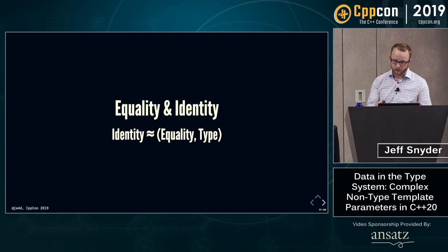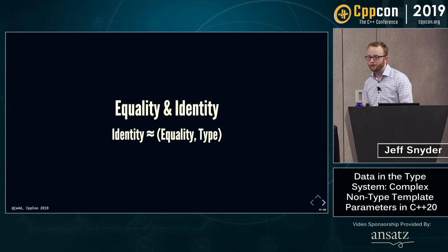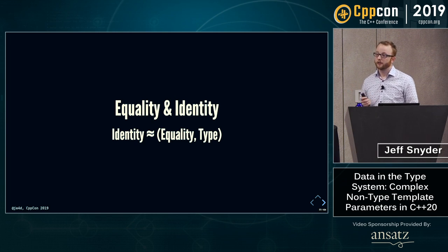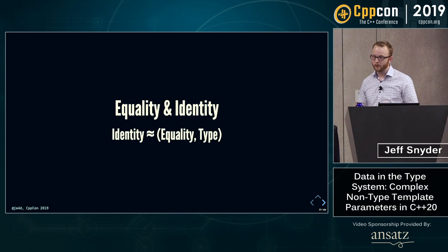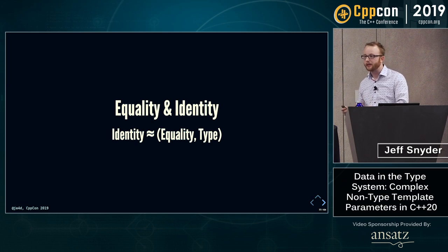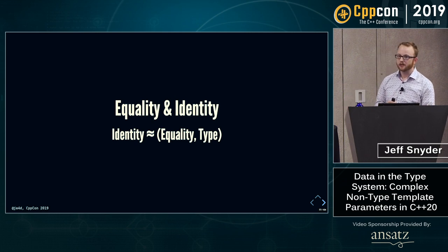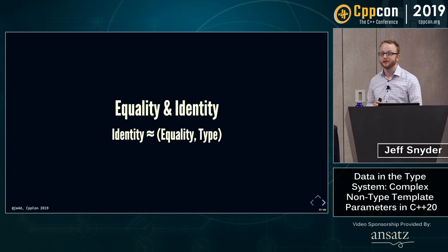Because of this hole in the rule, there is a proposal to remove class-type non-type template parameters from C++20 entirely. I think it's an overreaction — we'd lose three years of work re-specifying this and would need a different feature in C++23. The Belfast meeting is coming up in a couple of months; we'll see what happens. I hope we still have them in C++20.